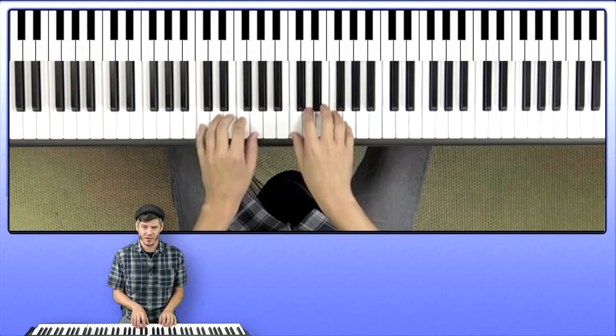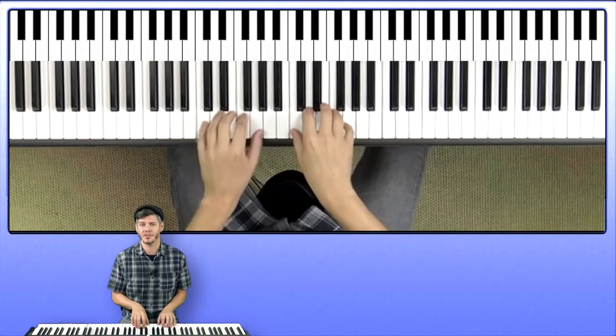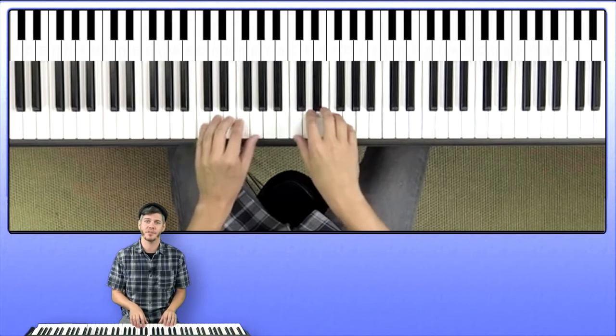That's your peripheral vision, and as it gets closer, it becomes a little easier to tell what it is. Let's try using our peripheral vision to move our hands from our C major position to the next C major position up the keyboard.